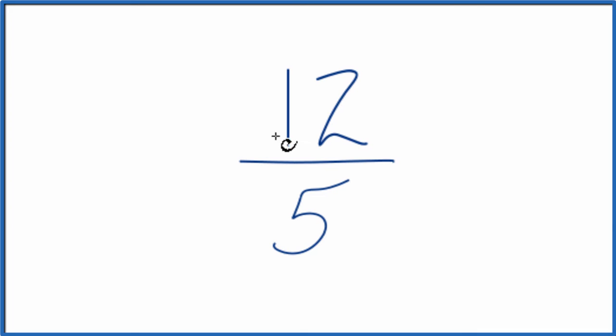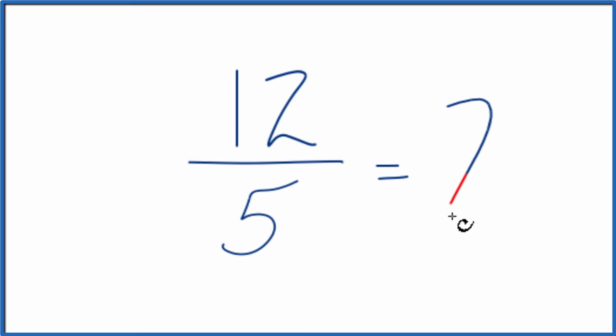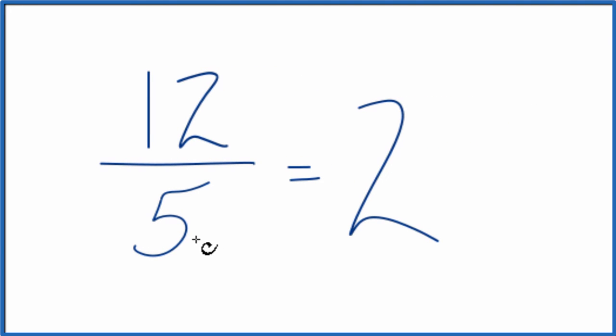So we really can't simplify it in that sense, but we can change it to a mixed number or a mixed fraction. The way we do that, we divide 12 by 5. So 5 goes into 12 2 times. 2 times 5 is 10, and that would give us 2 left over. So we can call 12 over 5 the same as 2 and 2 fifths.